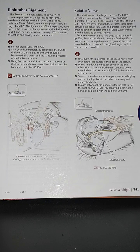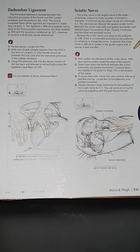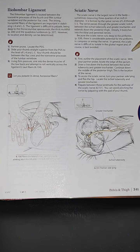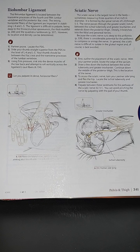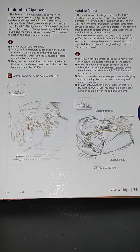Because the sciatic nerve runs deep to the piriformis, there is considerable potential for the piriformis to compress or entrap the nerve. I've mentioned this many times — there are times it is not really sciatic nerve syndrome; it is just the piriformis being hypertonic or in spasm. That deep muscle can be very hypertoned, especially if you do a lot of lateral rotation or have given birth.